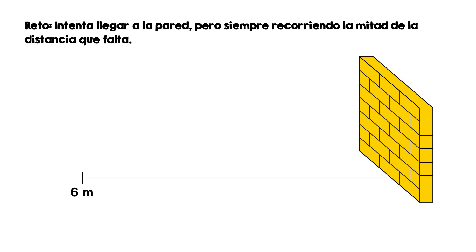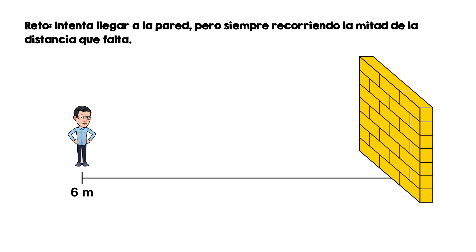Le pedimos al Guillito que se aparezca. Le explicamos que lo que queremos es que intente llegar a esa pared, pero con una condición muy importante: siempre debe recorrer la mitad de la distancia que le falta. Guillito dice que está muy fácil, pero se le recuerda la condición.